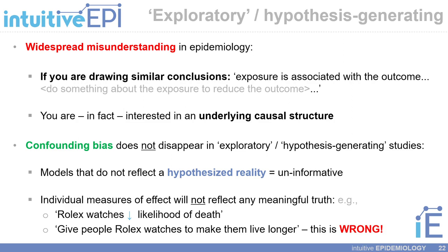If your model does not reflect the hypothesized reality, which is usually depicted using a diagram, the results from that model — the individual measures of effect — will be largely uninformative. Going back to previous examples I've used in earlier videos, if you do an observational study where you do not consider confounding bias, you may find that owning a Rolex watch will decrease your likelihood of death, and you may conclude that giving people a Rolex will make them live longer. You may draw similarly erroneous conclusions in your epi study if you do not think about the underlying structure or hypothesized relationships between your exposure and your outcome — and this requires thinking about confounding bias and backdoor paths.